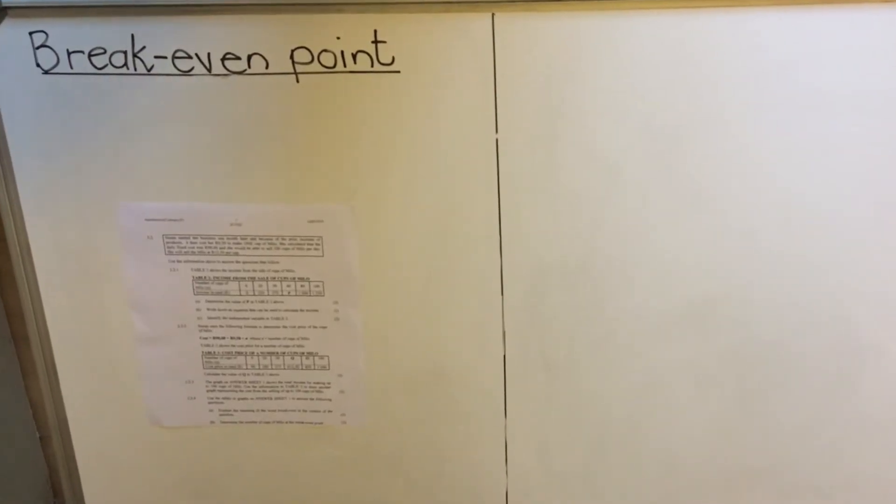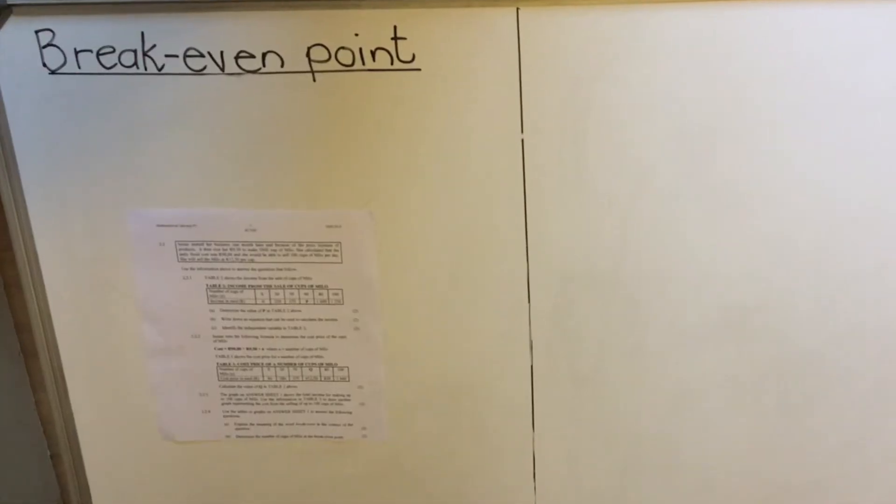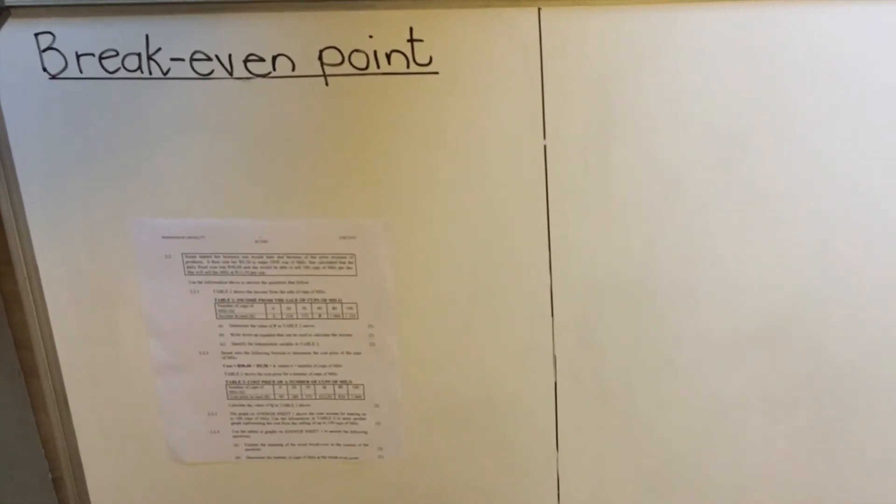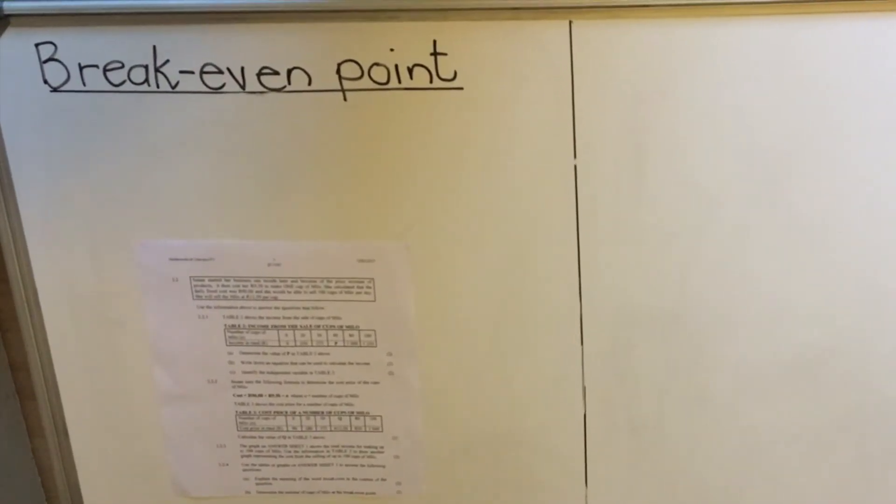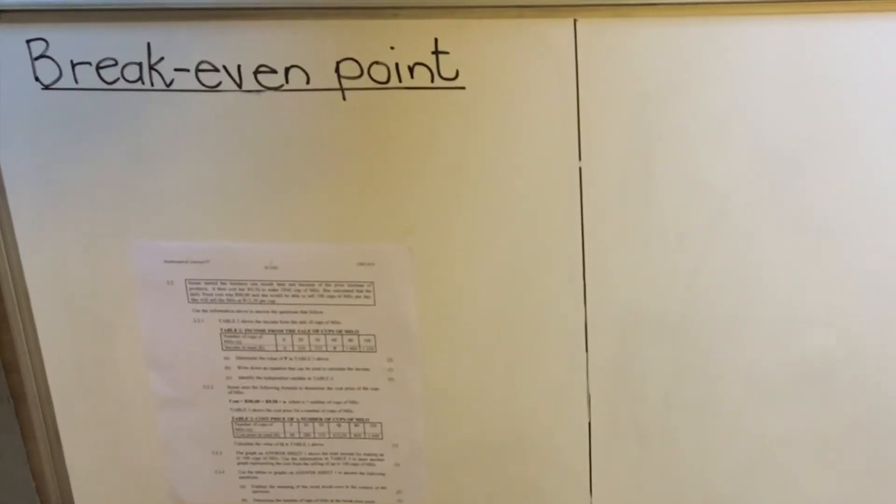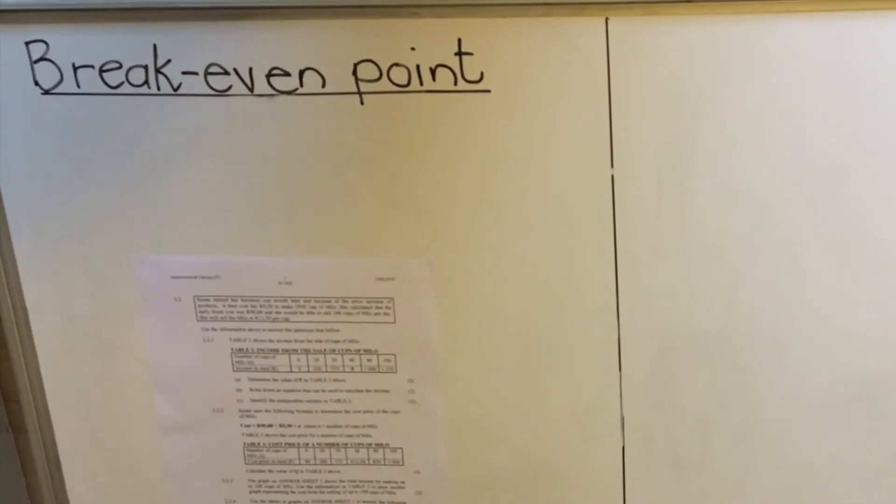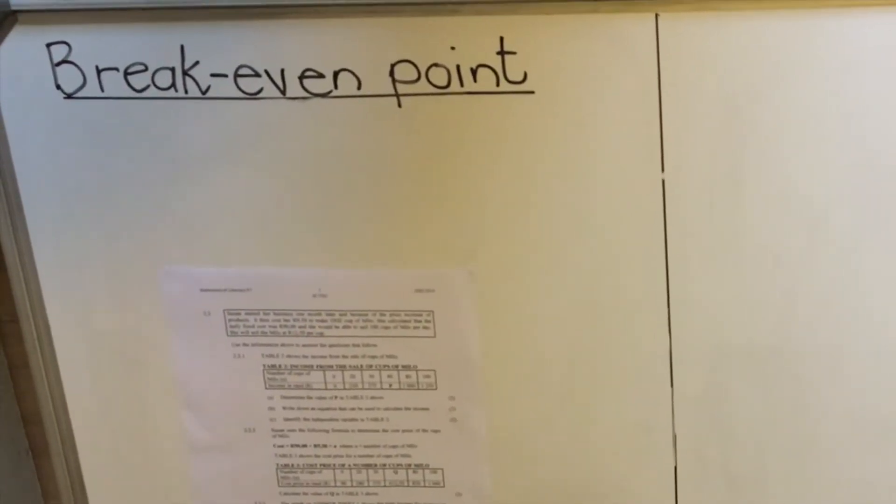So break-even point is the point where your expenses are equal to your income. You have not made profit yet. So at that point where your expenses are equal to your income, no profit, but no loss. You have not lost money. Whatever you put into the business, that's what you got out. No profit. So that's the break-even point.